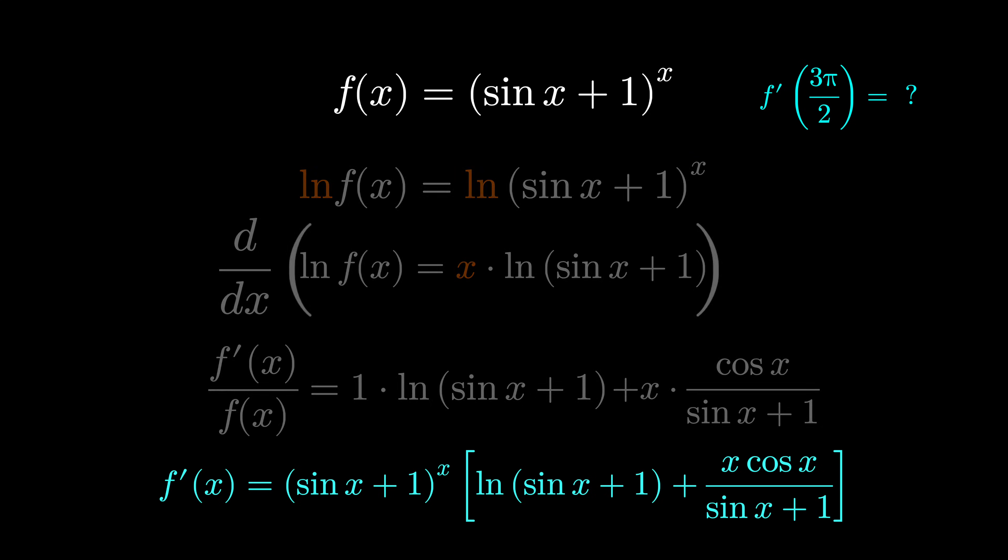We've taken this derivative, but as soon as we try to answer the question by evaluating at 3π/2, we'll see the issue. Sine of 3π/2 is negative 1. Negative 1 plus 1 is 0, and uh-oh, we're trying to take the natural log of 0, which is undefined. This is the downfall of logarithmic differentiation. What should we do?